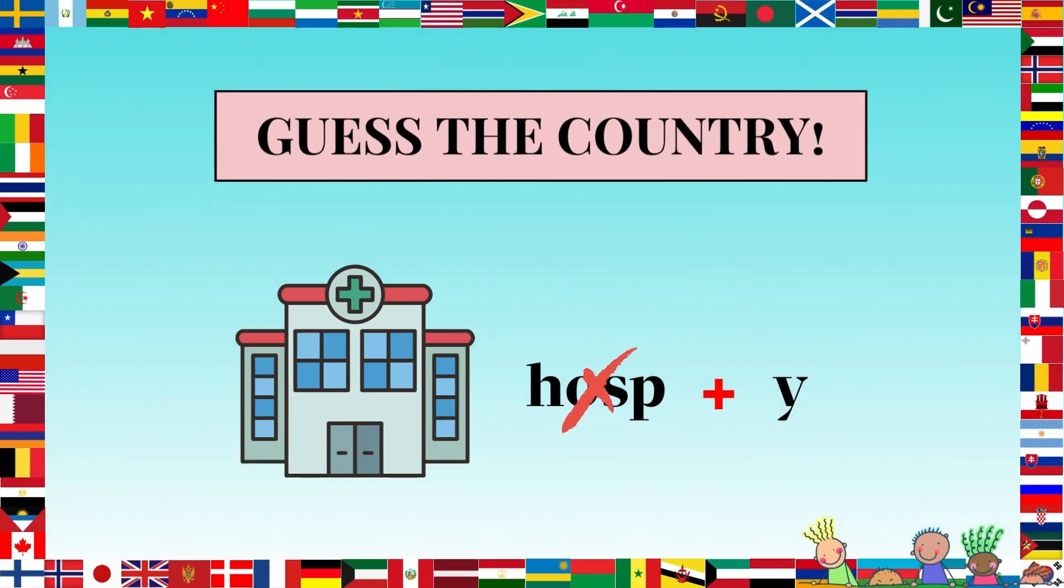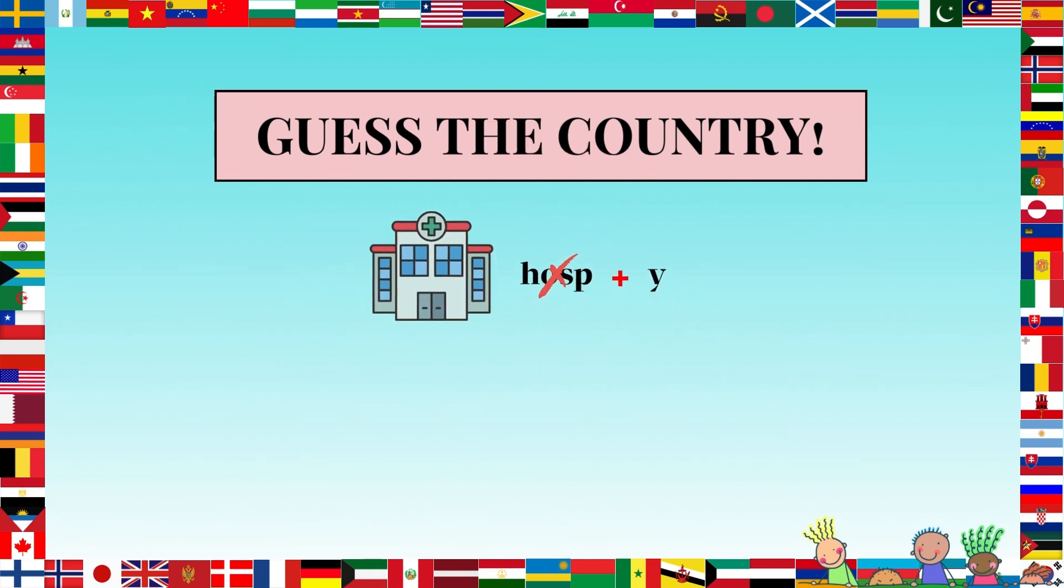As a warm-up, let's have a little fun with this rebus. Deducing from the pictures and the letters given, can you guess what country this is? Let's solve it together. The first image looks like it's a hospital. However, the letters H-O-S-P are crossed out, so we're going to take them away. That leaves us with ITAL. Then we just add the Y, giving us Italy.